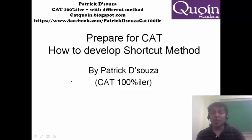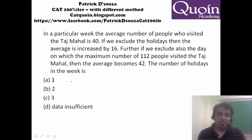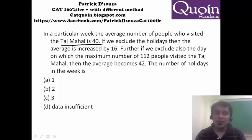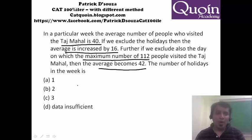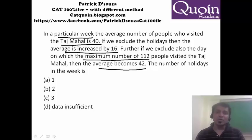There are shortcut methods without using options also. Let's take another sum. The problem says the number of people who visited the target market in a particular week averages 40. If you exclude the holidays, the average increases by 16. Further, if you also exclude the maximum number of 112, the average becomes 42. Options are not of much help here. One way is just substituting: I know it is a particular week, meaning there are 7 days. So 7 times 40 gives 280 — the total number of people.